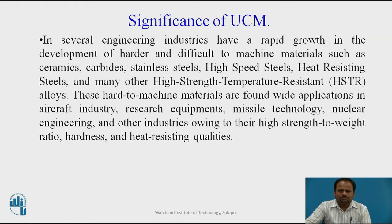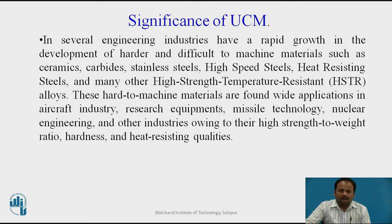The significance of unconventional machining: several engineering industries have seen rapid growth in the development of harder and difficult-to-machine materials such as ceramics, carbides, stainless steels, high speed steels, heat resisting steels, and many other high-strength temperature-resistant alloys. These hard-to-machine materials find wide application in the aircraft industry, research equipment, missile technology, nuclear engineering, and other industries owing to their high strength-to-weight ratio, hardness, and heat resisting qualities. Therefore, engineers are forced to innovate such types of systems.